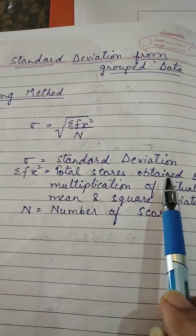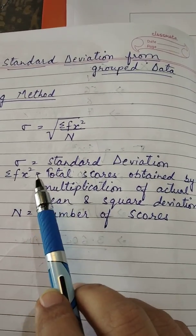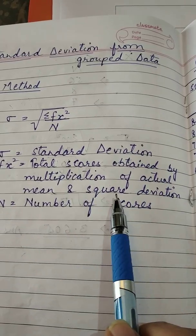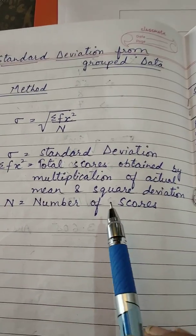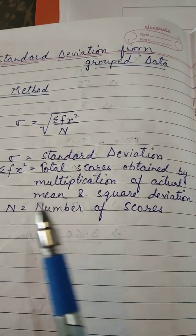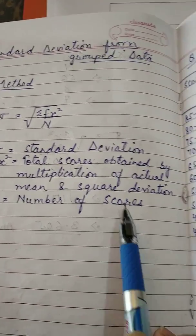SD pata hai aapko standard deviation. Sigma fx square is total scores obtained by multiplication of actual mean and square deviation. And n is number of scores.